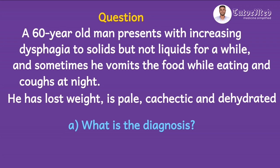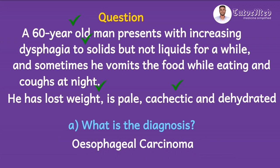The relevant information here includes the age of the man — he's a 60-year-old, so an elderly. He has dysphagia to solids but not liquids for a while, which is very important information. The fact that he has lost weight and is cachectic and dehydrated. So the diagnosis is likely to be esophageal carcinoma. Let's take a short journey through dysphagia in general and then esophageal carcinoma.